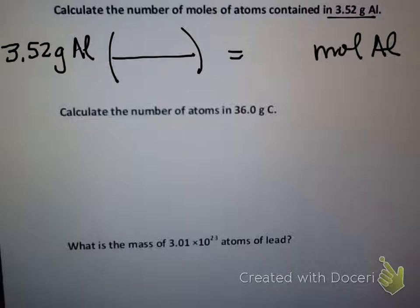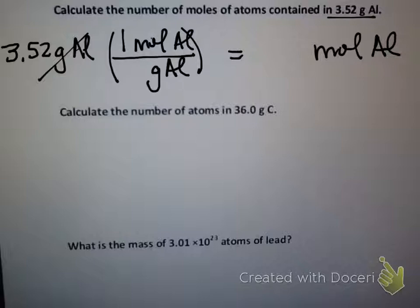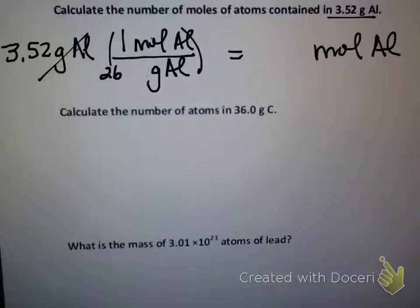We want to convert 3.52 grams of aluminum to moles using molar mass. I want to get rid of grams, so I put grams on the bottom of my conversion factor and moles of aluminum on top. A key hint: whenever you do these conversions, if you have some other unit against a mole, you always compare it to one mole. The one always goes beside the mole. Now, one mole of aluminum is how many grams? That comes from the periodic table — the atomic mass. Looking at the periodic table, one mole of aluminum is 26.98 grams.